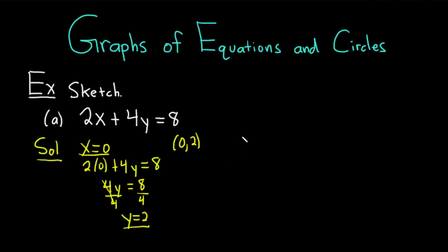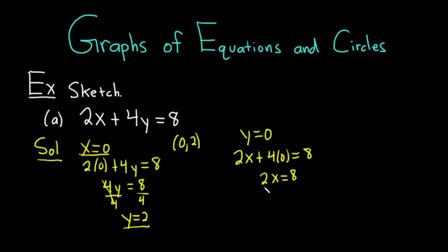Then you do the same thing with y — set y equal to 0. So we have 2x plus 4 times 0 equals 8, so 2x is equal to 8. Divide by 2, so you get x equals 4. When x is 4, y is 0, so we have the ordered pair (4, 0).